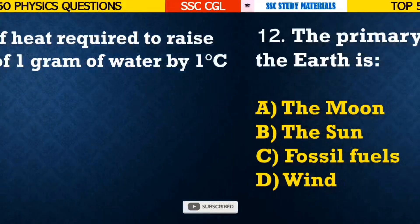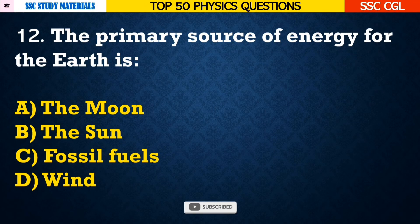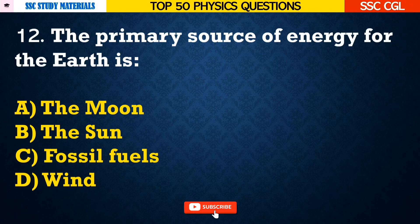Question number 12: The primary source of energy for the earth is — Answer B. The sun.